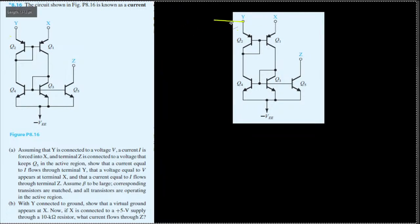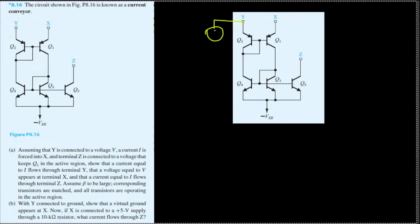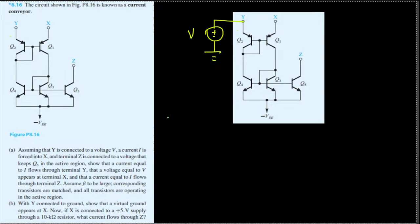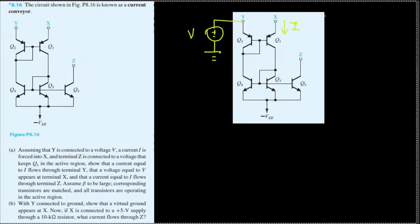We grab a wire from here, connected to a voltage source (plus/minus), and that is connected to ground. So this is voltage v connected to the Y terminal, and there's a current i flowing into the X terminal.